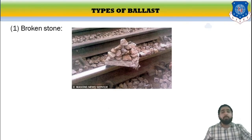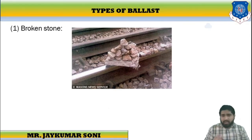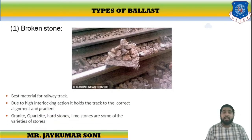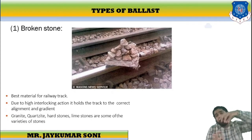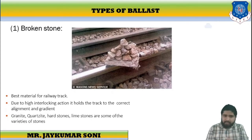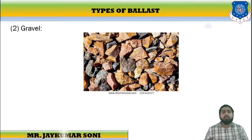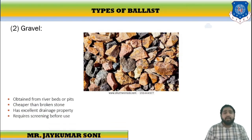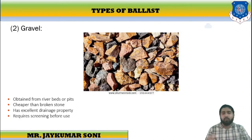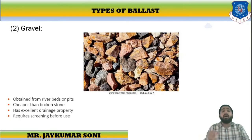There are various kinds of ballast. The first is broken stone ballast, which is the best material for railway tracks. It provides high interlocking and helps hold the sleepers within the ballast layer. Stones used include granite, quartzite, hard stones, or limestone. The second type is gravel, obtained from riverbeds, river pits, or seashores. Gravel is cheaper than broken stones such as granite or quartzite, has excellent drainage properties, and requires cleaning to ensure it contains no dust material.